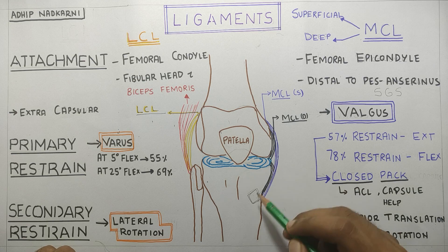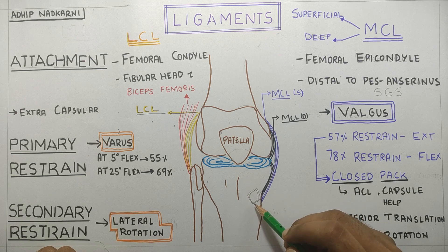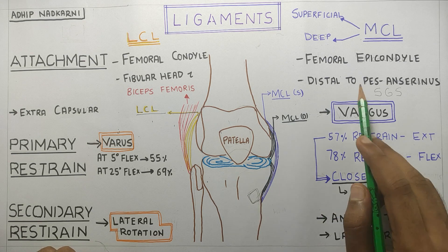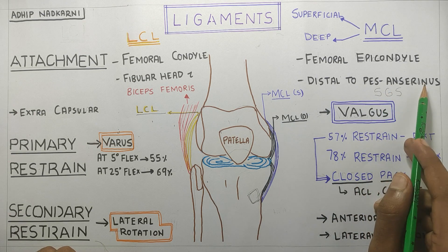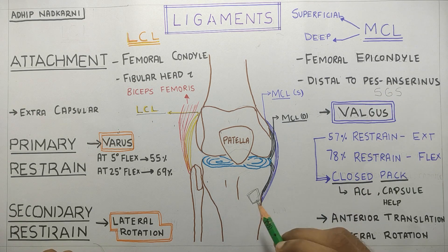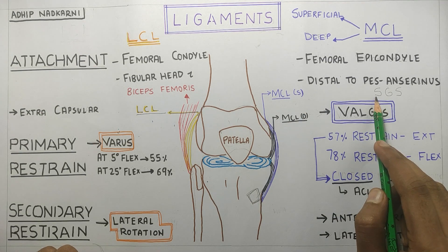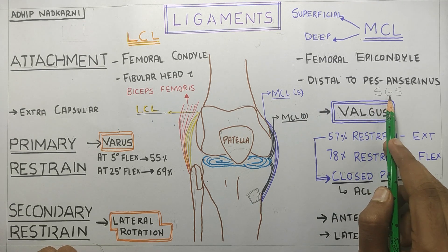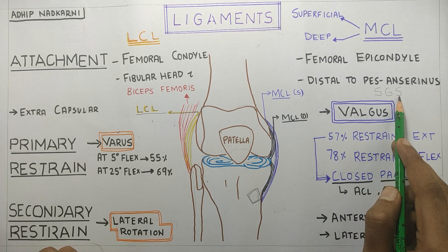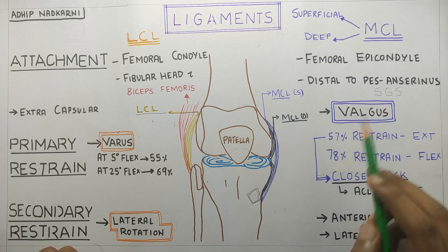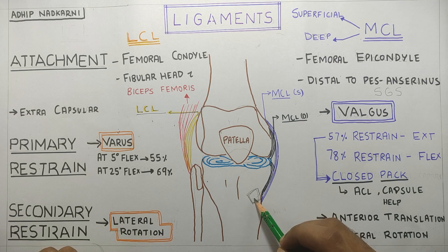Distally, MCL is attached to the tibia distal to pes anserinus. Pes anserinus is a place where semitendinosus, gracilis, and sartorius — these three muscles — get attached.